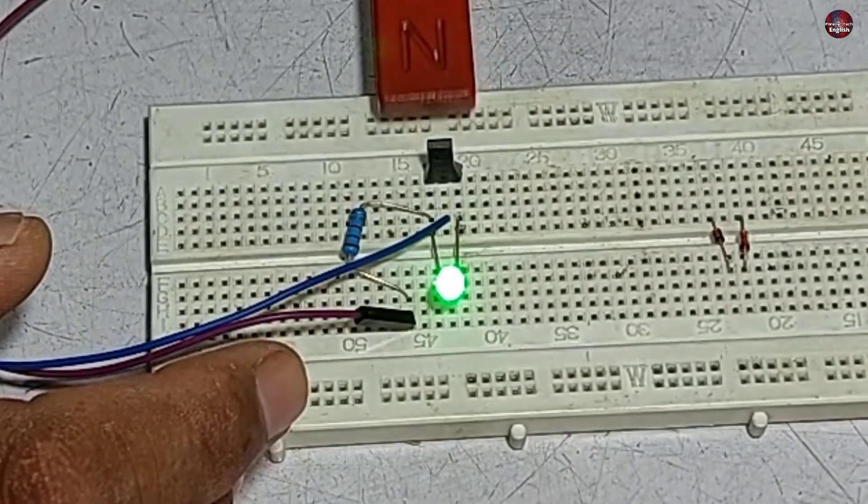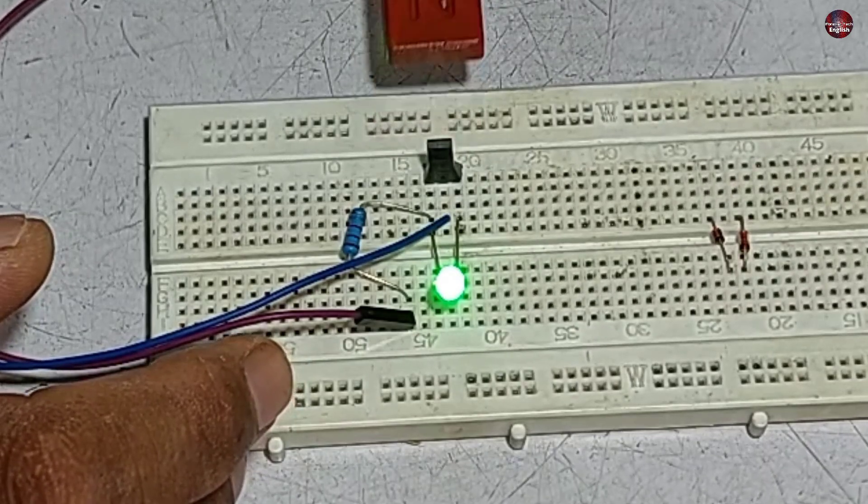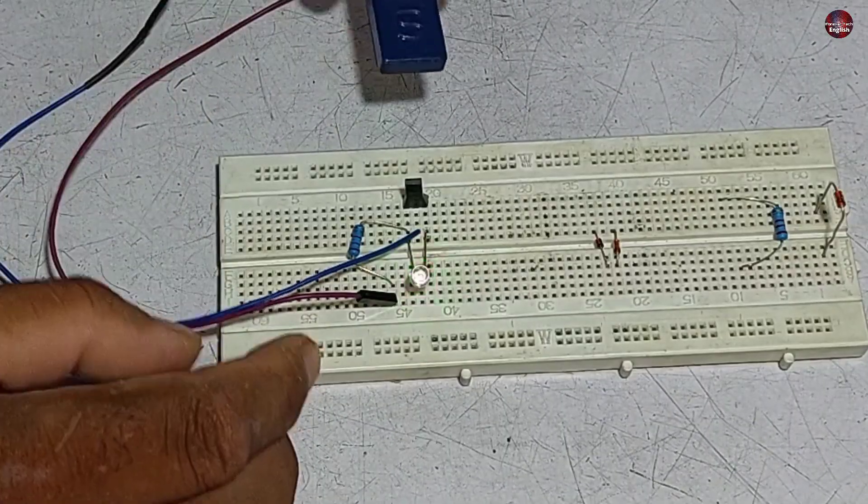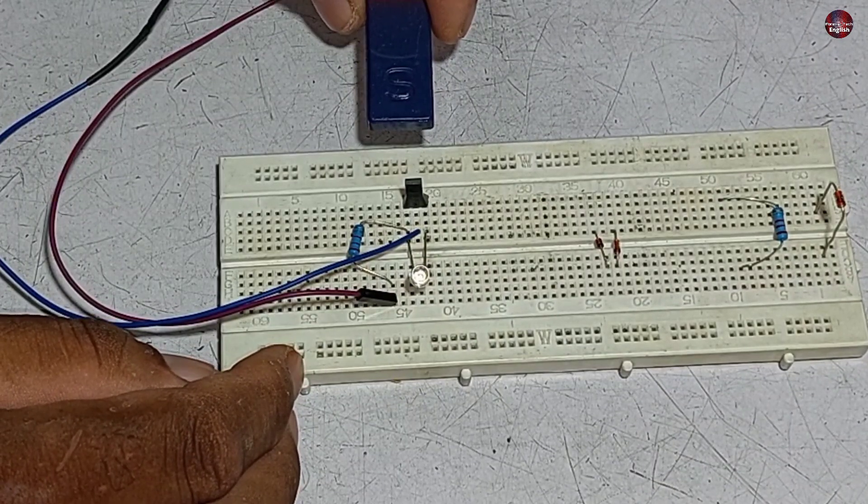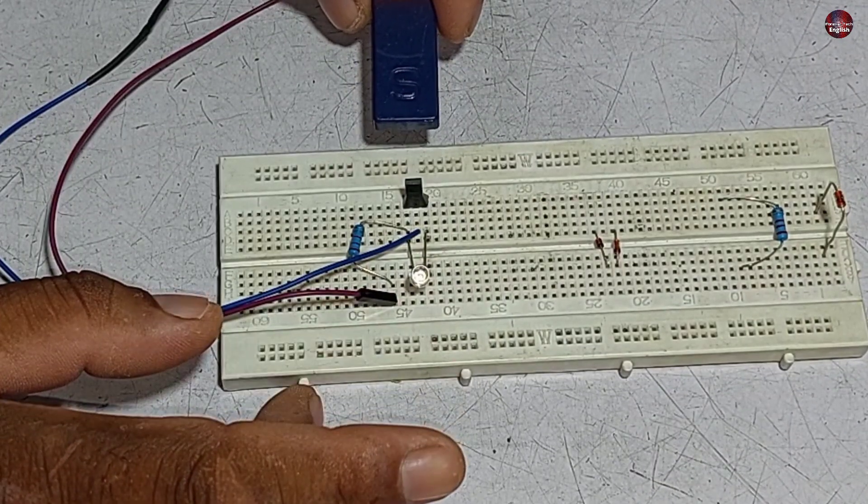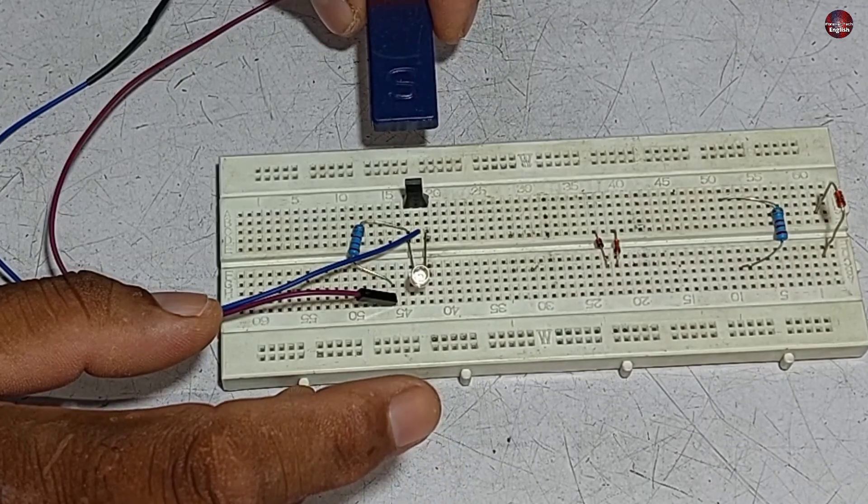When I bring the north pole closer to the hall sensor, it does not affect it. Now as I brought the south pole near the hall sensor, the light turned off from a distance, as the magnet is not even closer to the sensor. Which means it turns off at the south pole.